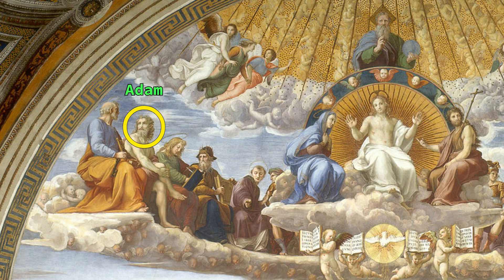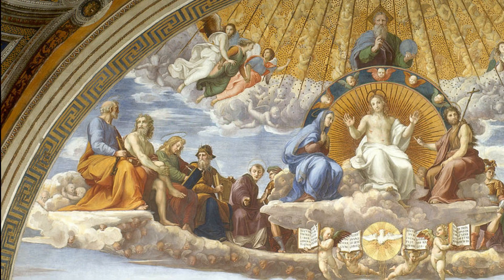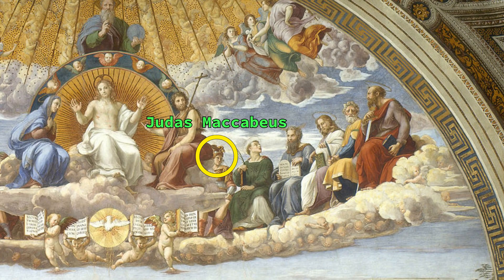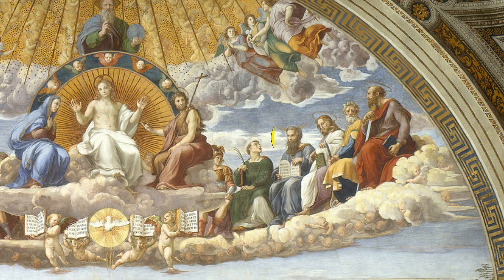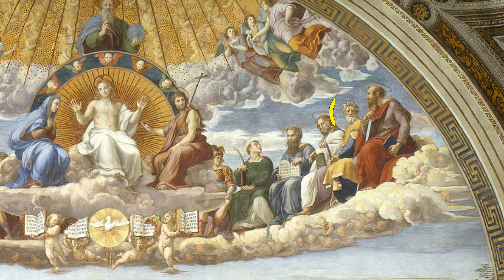Next to him is Adam, still half naked after eating from the fruit in the Garden of Eden, but also Saint John the Evangelist, one of the major writers of the Bible, and Saint Lawrence who was martyred under Emperor Valerian. On the other side we find the Jewish priest Judas Maccabeus in full golden armor. Next to him is seated Saint Stephen, the first Christian martyr, alongside Moses holding the Ten Commandments in his hands. We then find Saint James the Elder, and Abraham holding the knife that symbolizes the relationship of mankind with God, and at the end Saint Paul with a sword, which he is usually portrayed with because of his martyrdom in Rome.